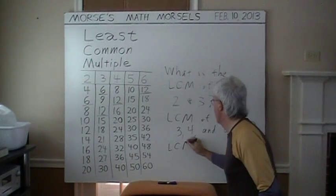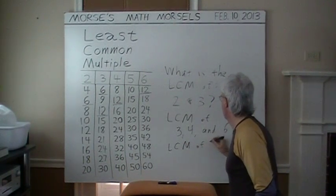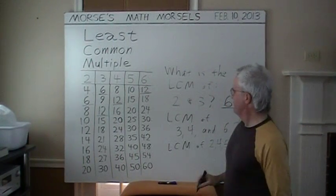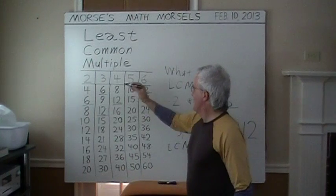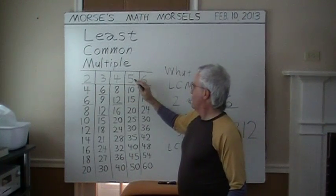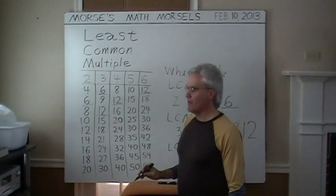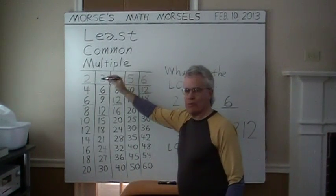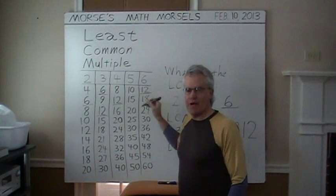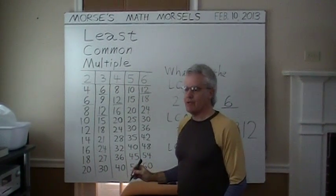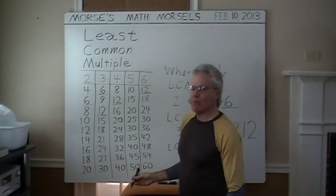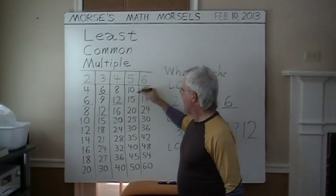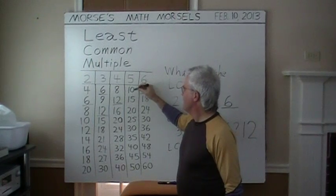One more example. LCM of two, four, five. Check the two, four, and five times tables. There are some shortcuts you can sometimes use. For instance, five is odd, and since two and four are even, the least common multiple of two, four, and five will have to be an even number. So we can begin skipping the odd multiples of five. Forget fifteen.